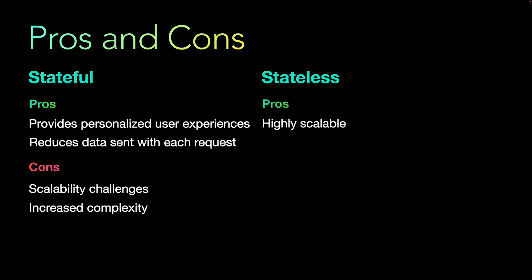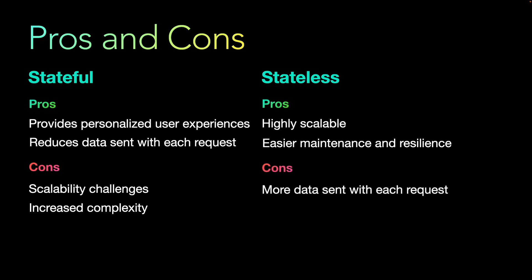For stateless systems, the pros include being highly scalable, since there's no dependency of state across requests and you can individually scale out each back-end infrastructure. They offer easier maintenance, resilience, and are simpler to implement — REST APIs are the standard today. Operationally, debugging is easier because each request is independent. Your blast radius is reduced: if a request fails, it only affects that individual request.